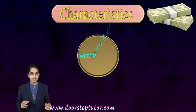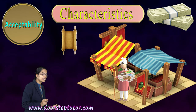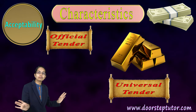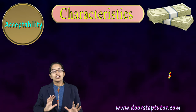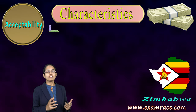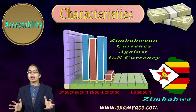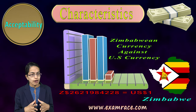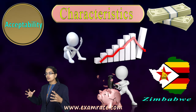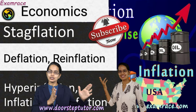The next characteristic is acceptability. Whatever comes to market — a banknote or a coin — must have acceptability, meaning it is an official tender. Gold, for example, is considered a universal tender accepted globally. Zimbabwe had a hyperinflation period during 2009, where within a single month the Zimbabwean currency's value dropped significantly against the US dollar, creating severe pressure on economic conditions. Civil unrest or recession can trigger hyperinflation, which is covered in separate lectures.